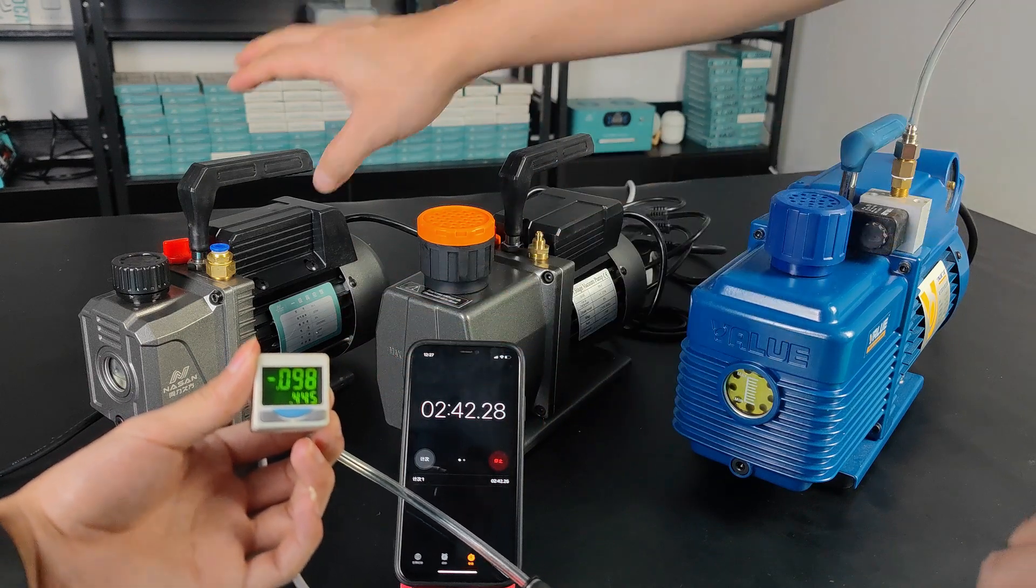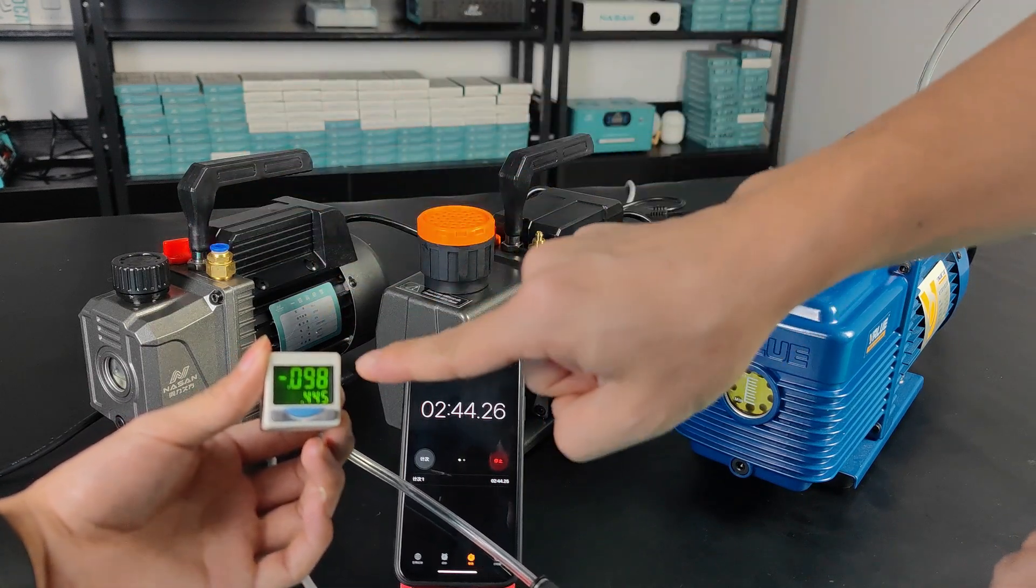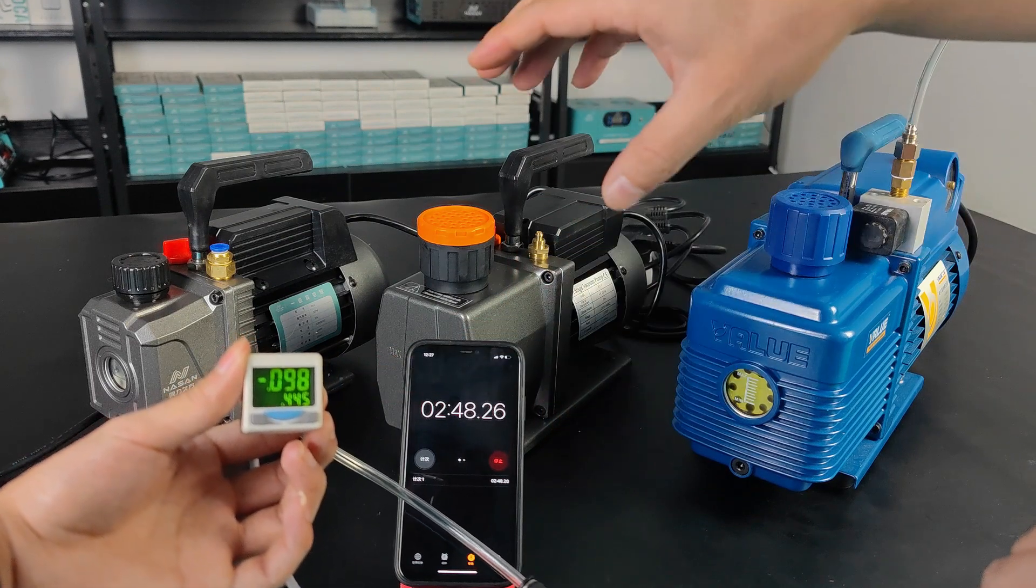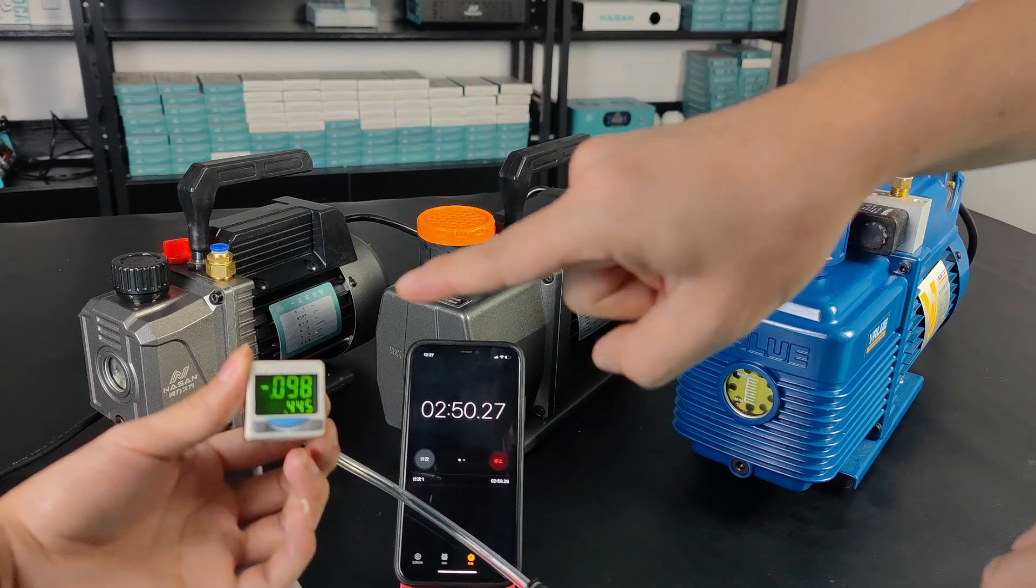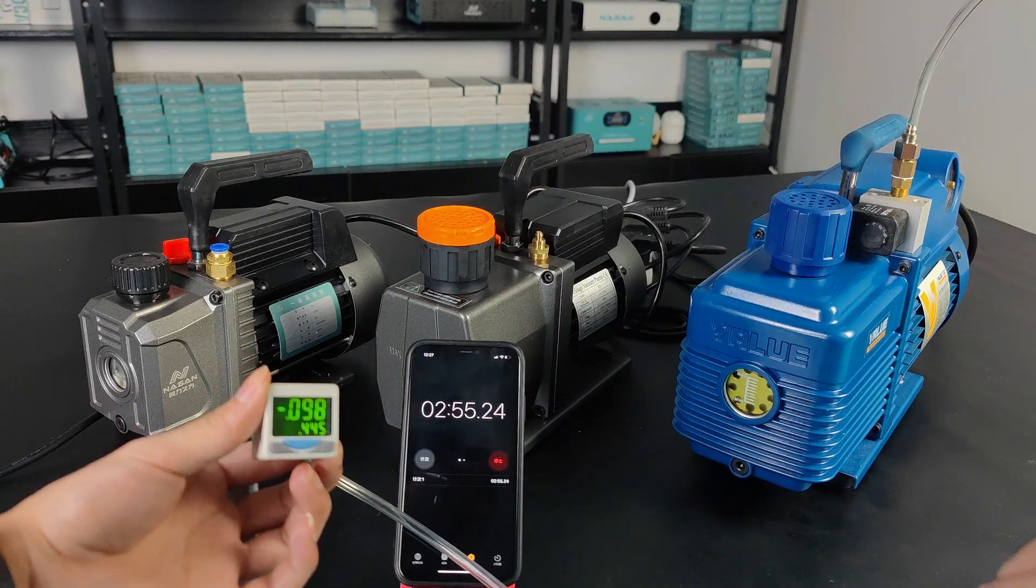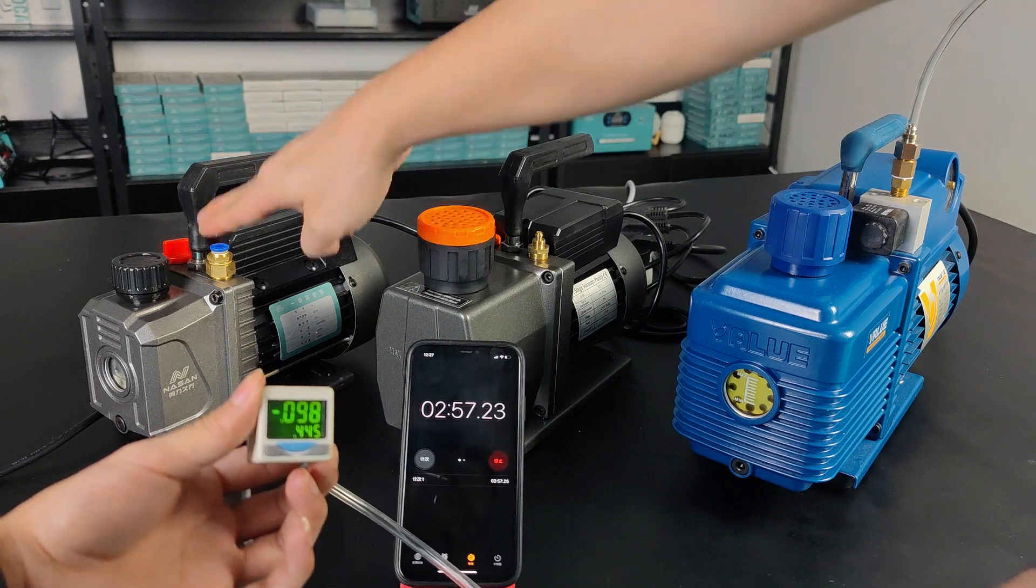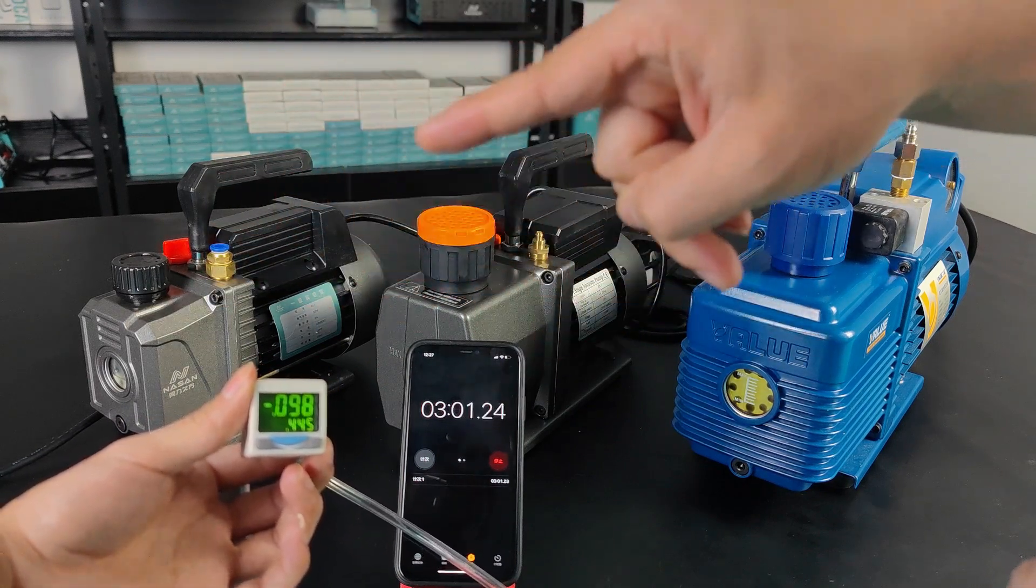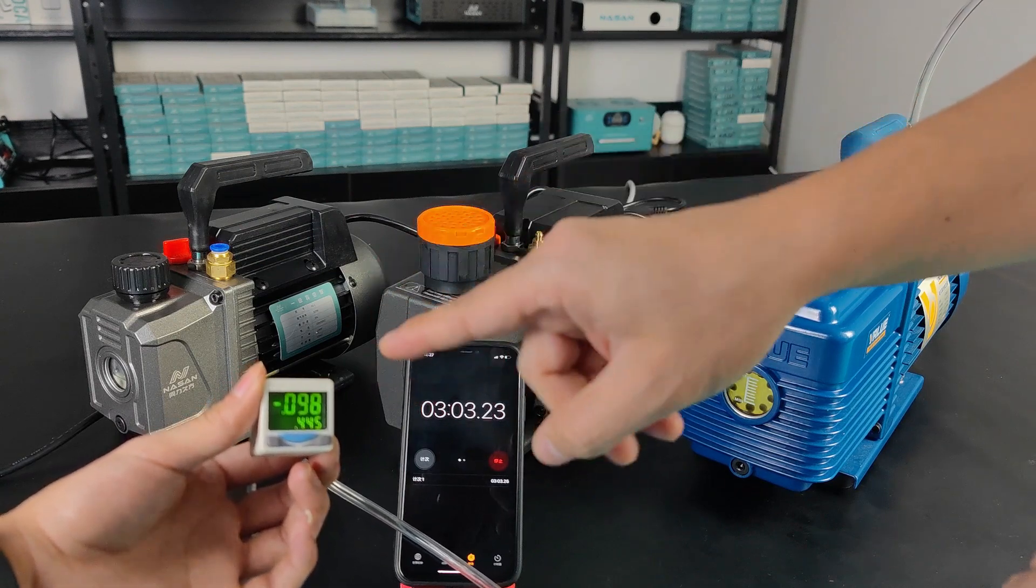We need to test them. If any of them doesn't reach this number, we send it back to the factory to fix it. For all our vacuum pumps, we customize them and make sure they're suitable for lamination.